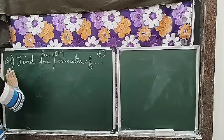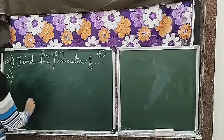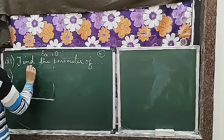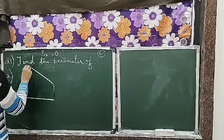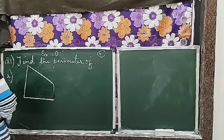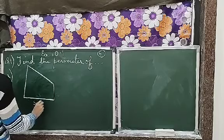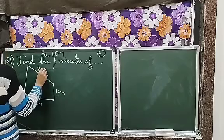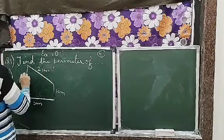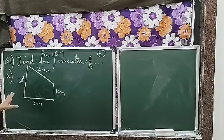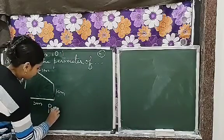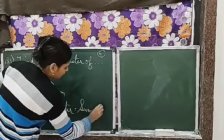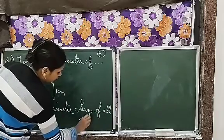The first one. Let's make the figure. This is 5 cm, this is 1 cm, 2 cm, and 4 cm. Okay, so we have to find the perimeter. What is the perimeter? Sum of all sides. Perimeter is equal to sum of all sides.